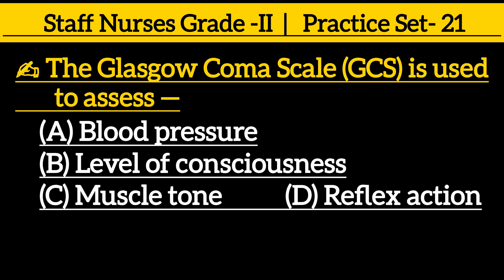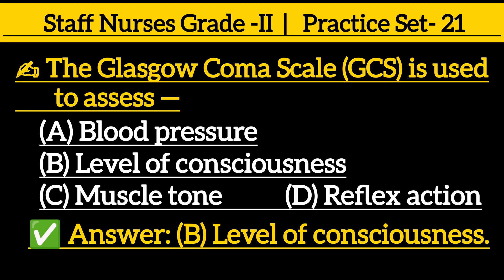The Glasgow Coma Scale is used to assess: Option A, blood pressure; Option B, level of consciousness; Option C, muscle tone; Option D, reflexes. Correct answer is Option B, level of consciousness.